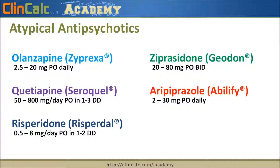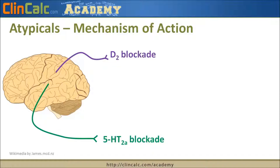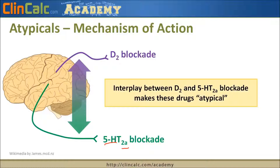One goal in thinking about atypical antipsychotics is distinguishing and differentiating them, because they are different drugs with pretty different adverse effect profiles and pharmacology. In general, atypicals work by blocking the dopamine D2 receptor, but they also block the serotonergic 5HT-2A receptor. Blocking both of these — the interplay between dopamine and serotonin blockade — is what makes these drugs 'atypical.'